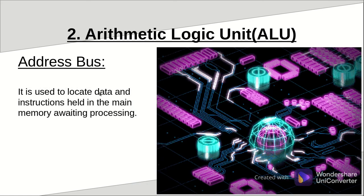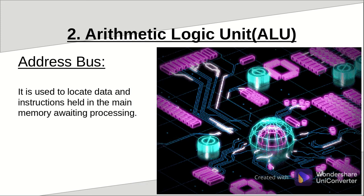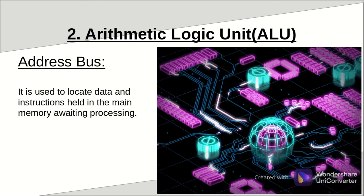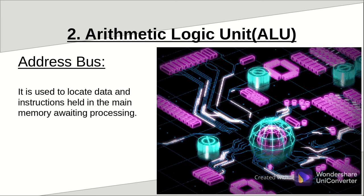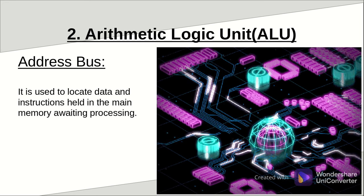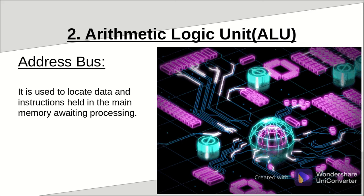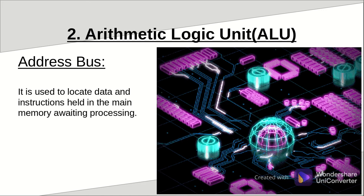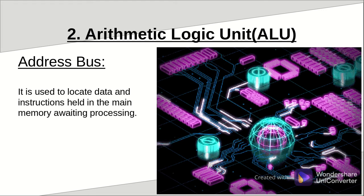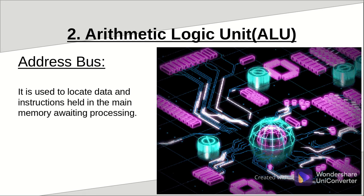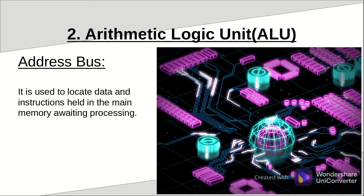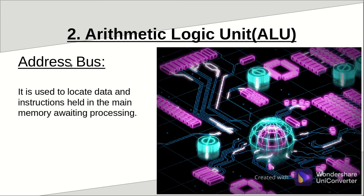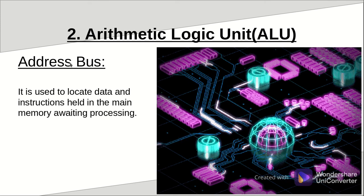As we continue discussing the arithmetic logic unit, we are also going to mention computer buses. A computer bus is an electrical pathway used by the CPU to transmit data or instructions between the CPU and other parts of the computer system. Think about a bus as a set of wires that transmit signals or data from the CPU to other parts, or from those other parts to the CPU. There are three main types of buses, and the first one is the address bus.